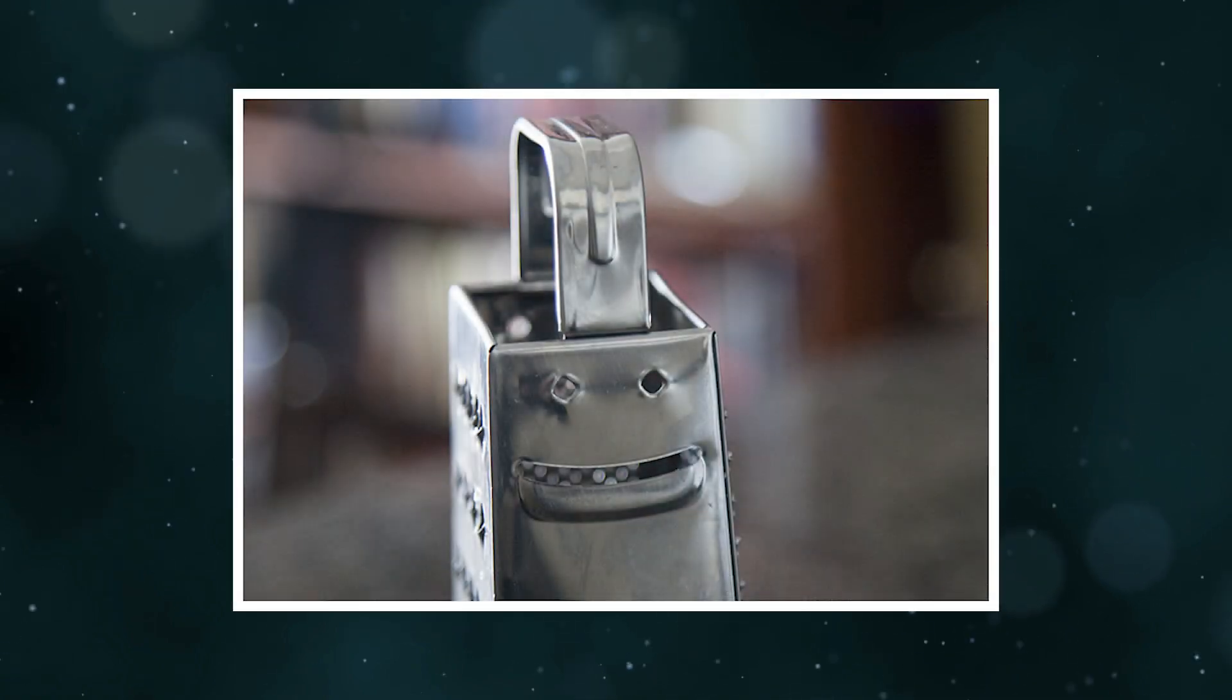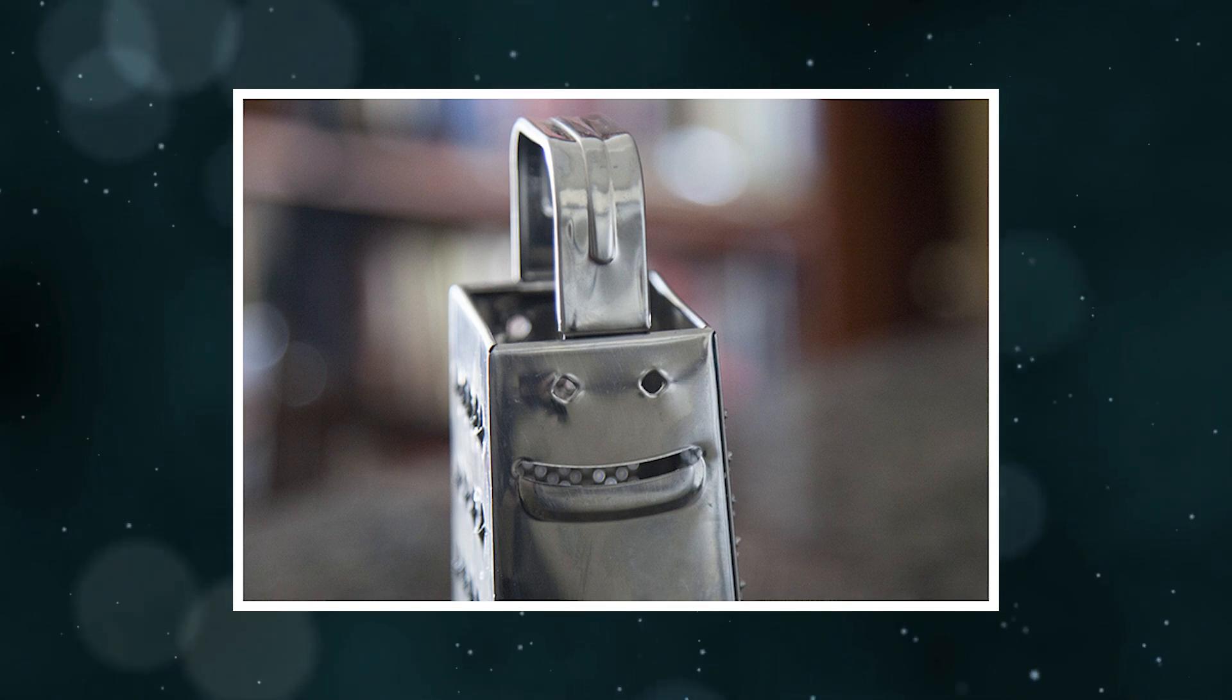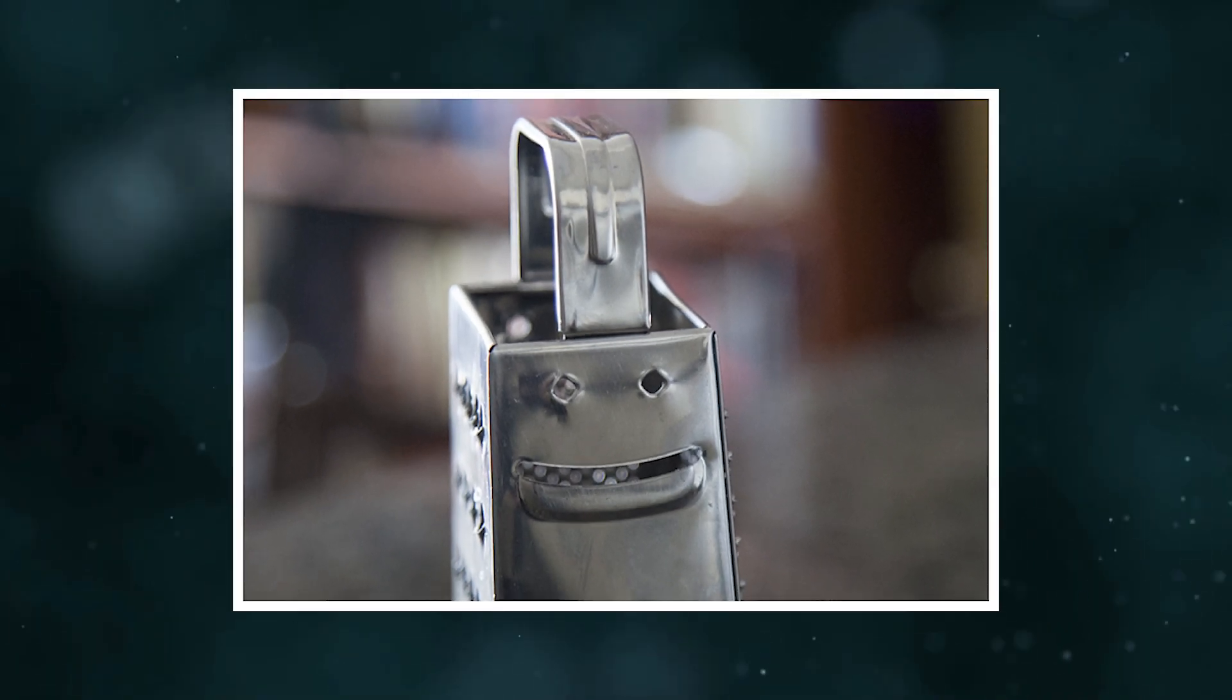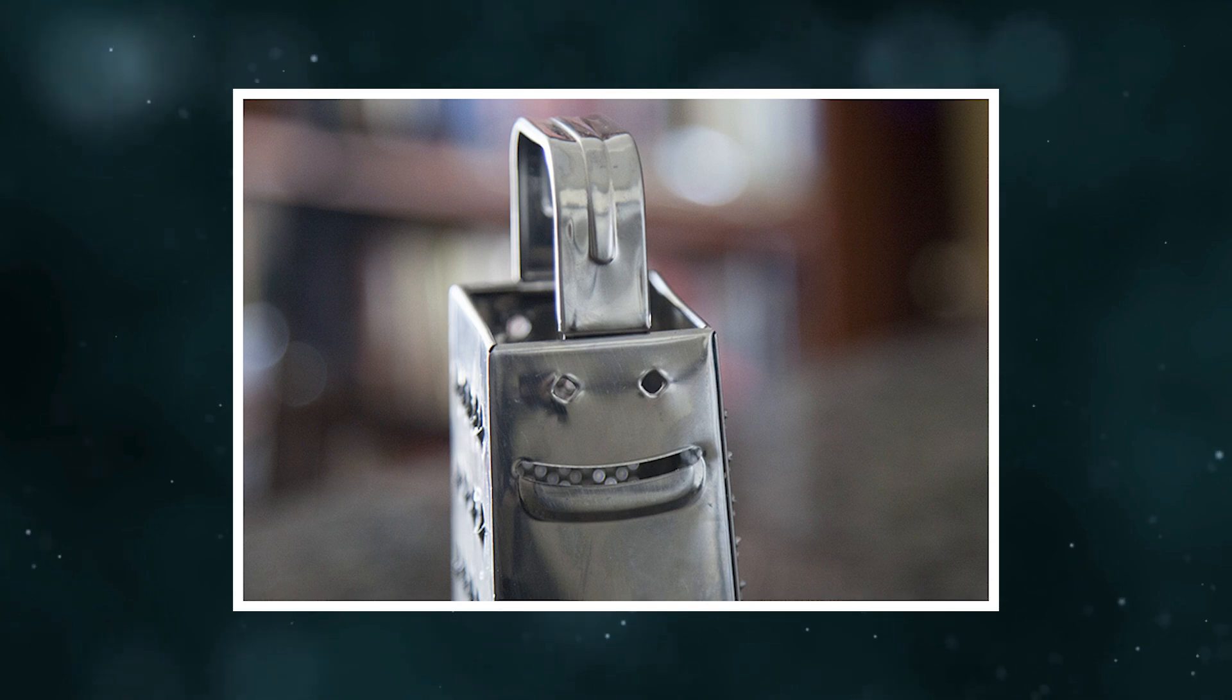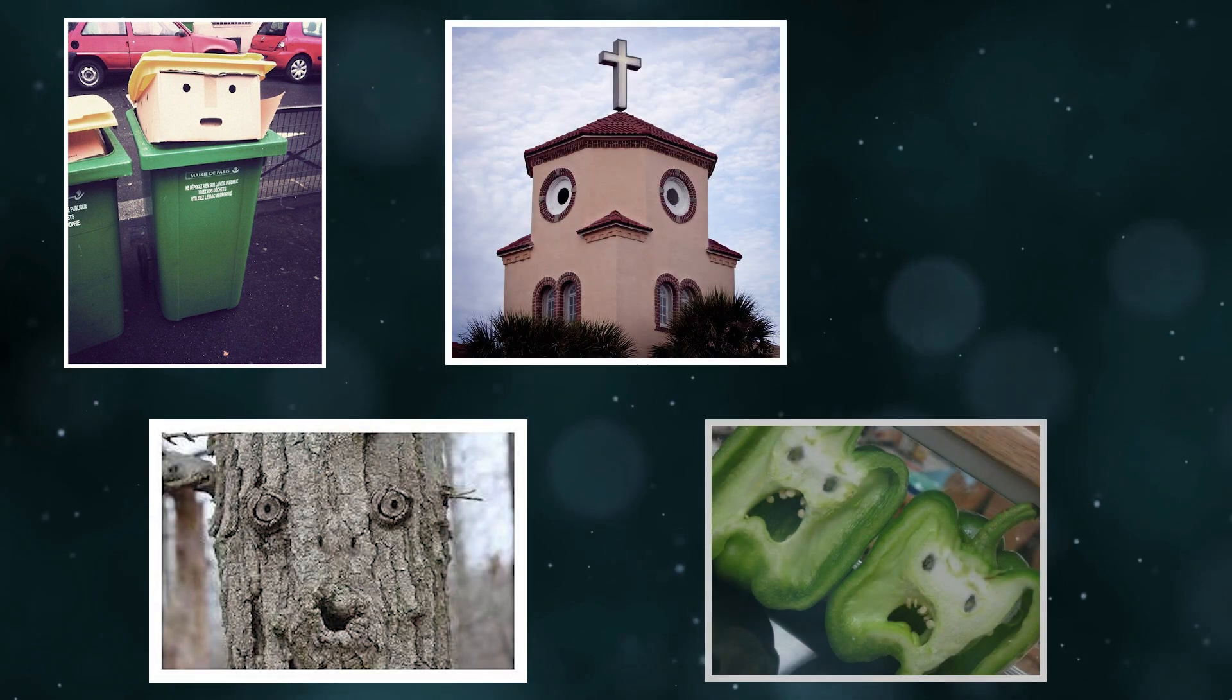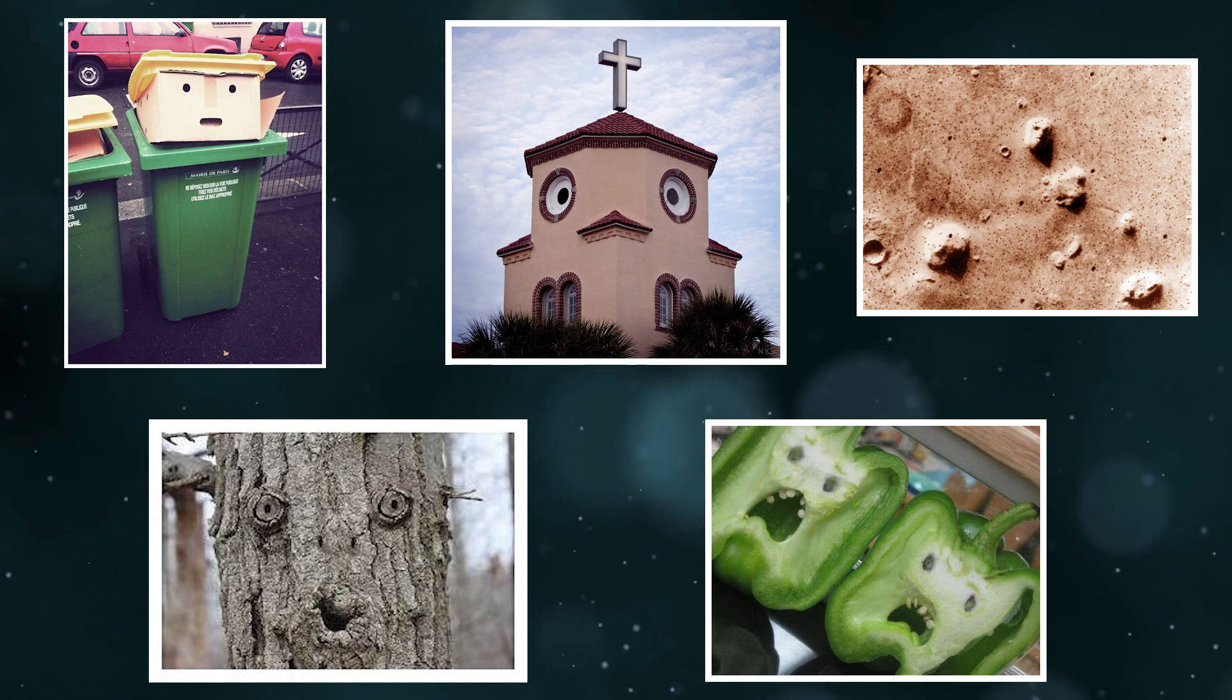Another example could be this common cheese grater. Yet when we see it from a side profile, we can almost instantly make out a face. In fact, a smiling face. Probably happy for doing a great job. And these are just two examples of pareidolia. There are so many common things we see every day where our brains will work that quickly to adjust it to something that we are familiar with.